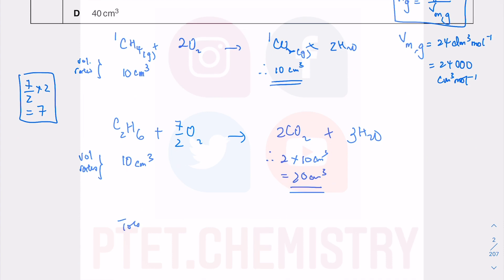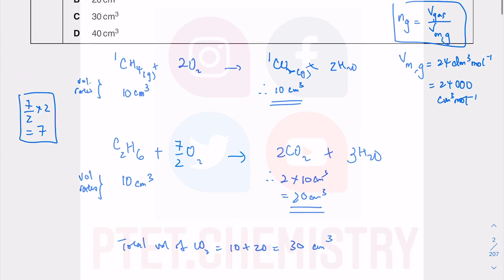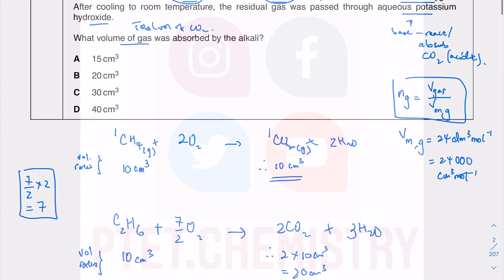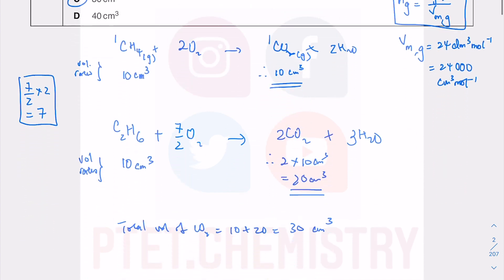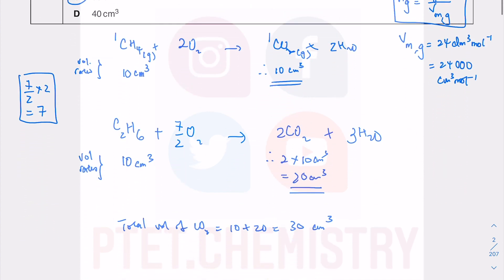The first equation gives 10 cm³ of CO₂ and the second gives 20 cm³, from burning 10 cm³ of each. Total volume of CO₂ = 10 + 20 = 30 cm³. All 30 cm³ of CO₂ is completely absorbed by the base, aqueous potassium hydroxide.